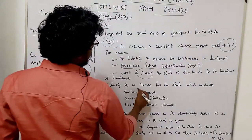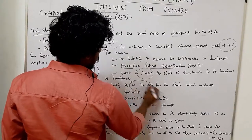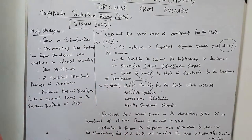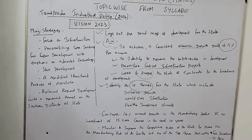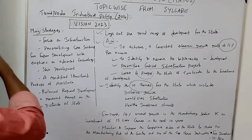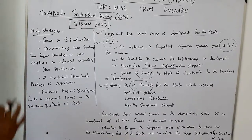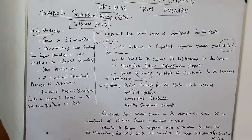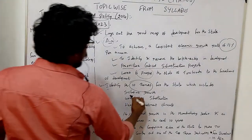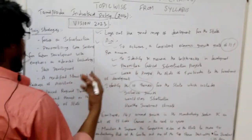The fifth point is to identify 10 themes for the state. In this document, we identify 10 themes and the state should be able to achieve inclusive growth.